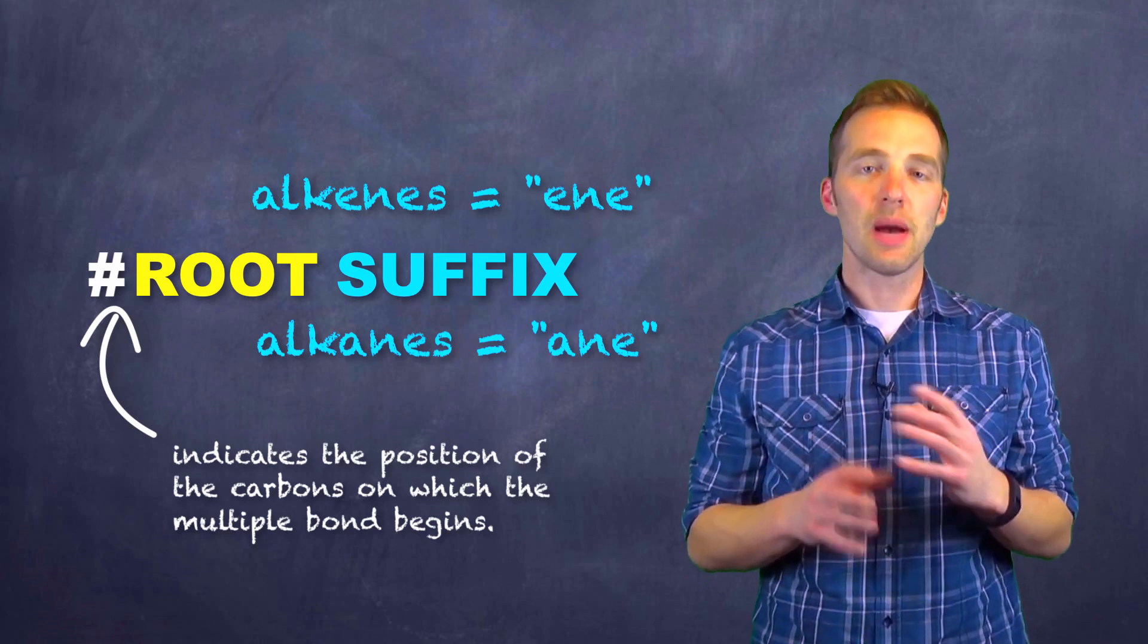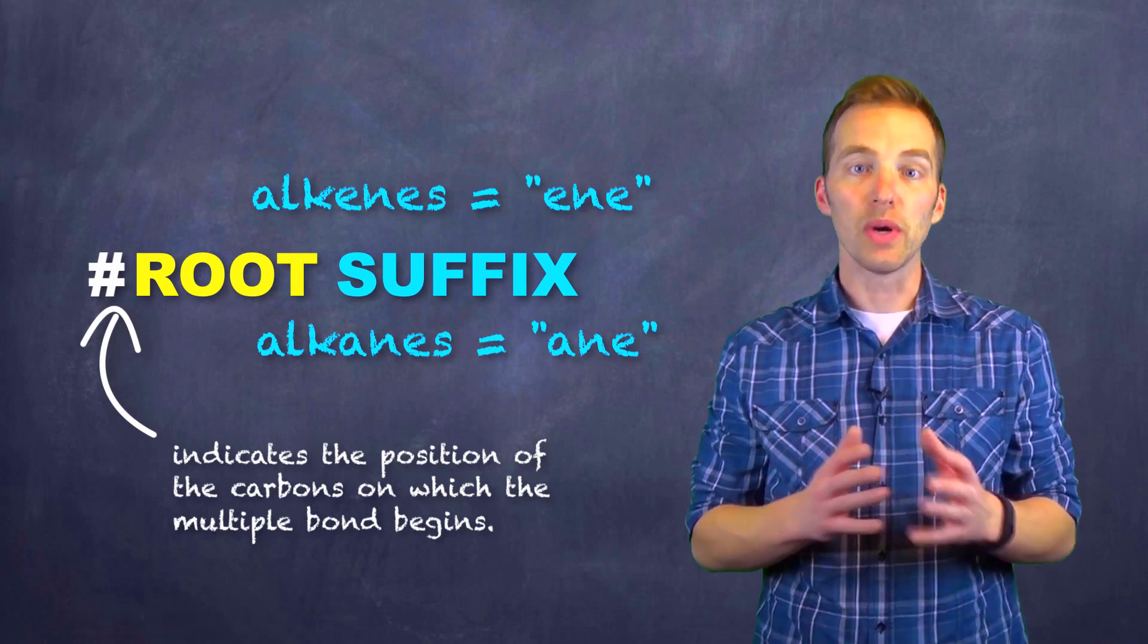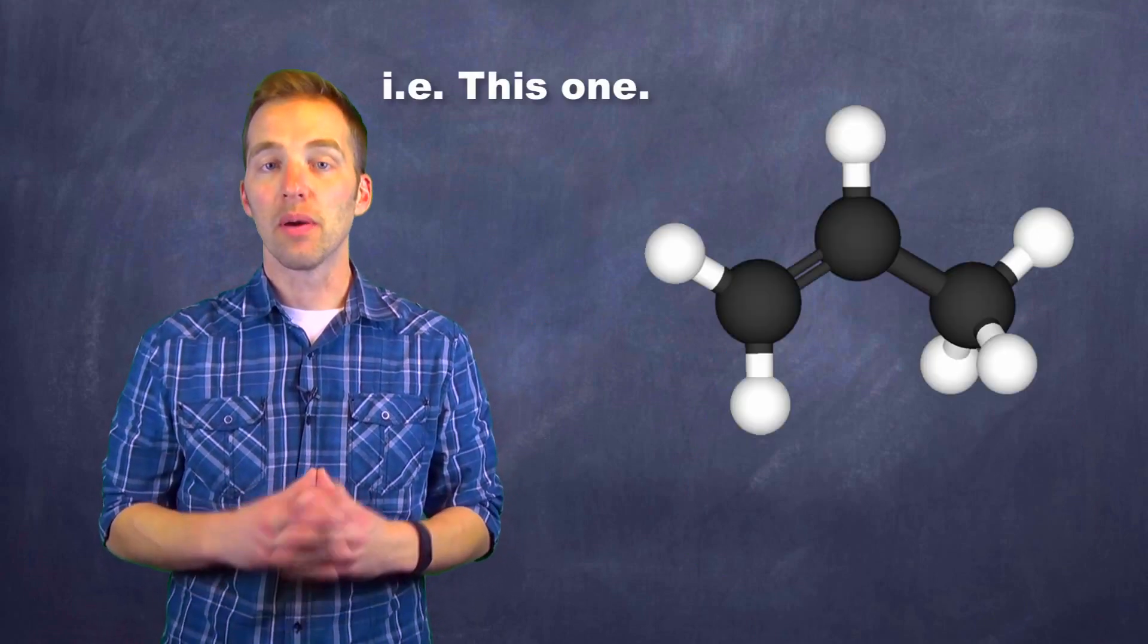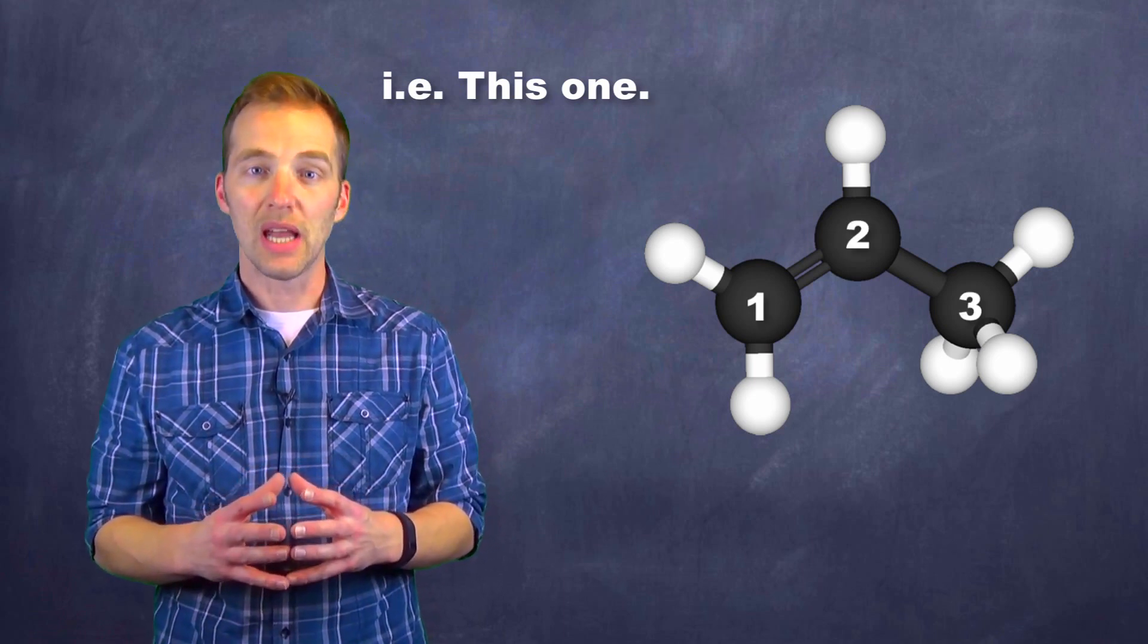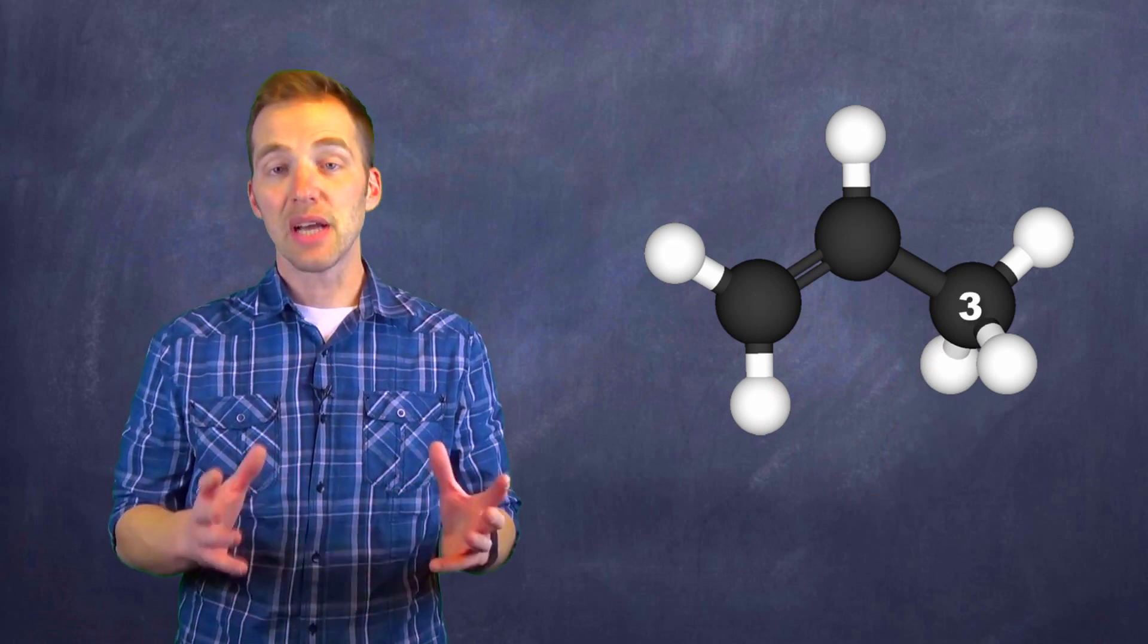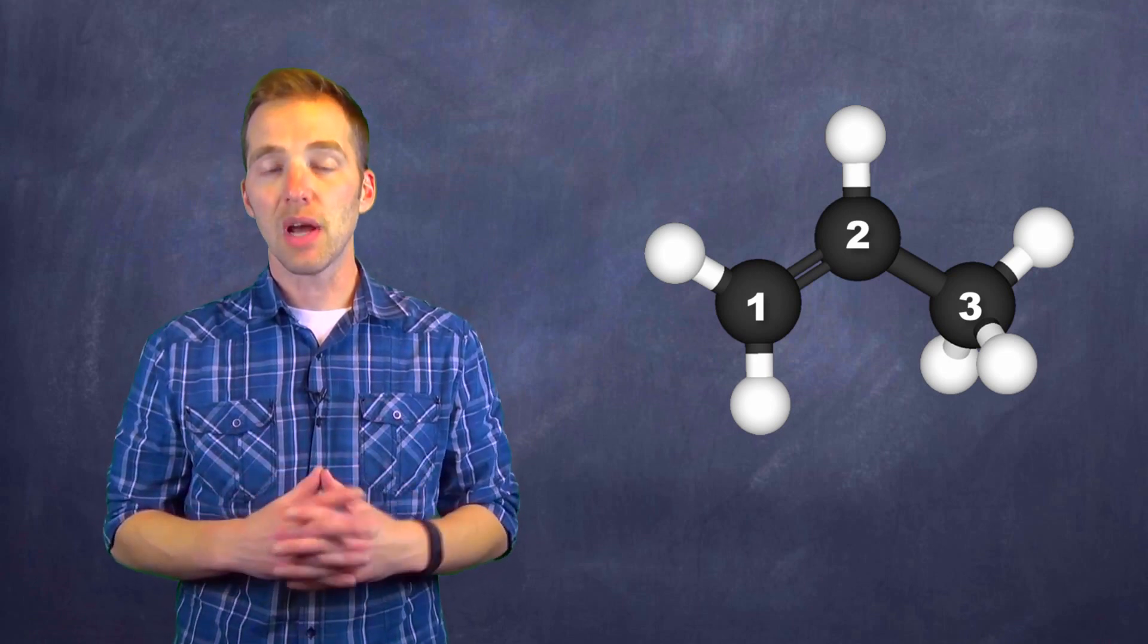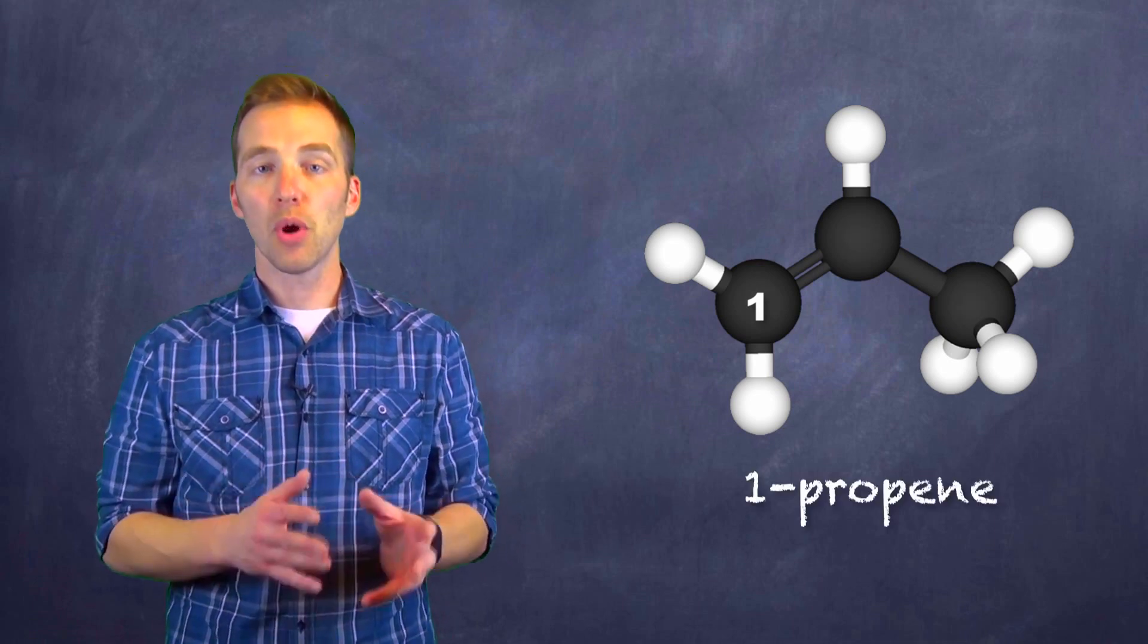So we always number the position of that multiple bond to be the lowest of the two carbons that it's between. So if we quickly take a look back at the molecule that we had with our multiple bond, you can see that with those three carbons, the molecule's multiple bond either starts on the one carbon or the three. But as I said, we want to keep it on the lowest possible combination of numbers. So we would start counting at the one carbon. So we would call this one-propene.